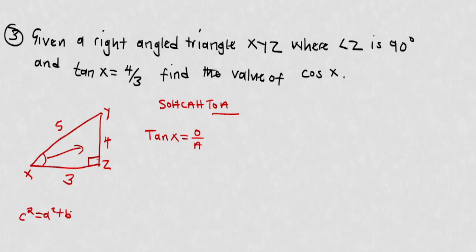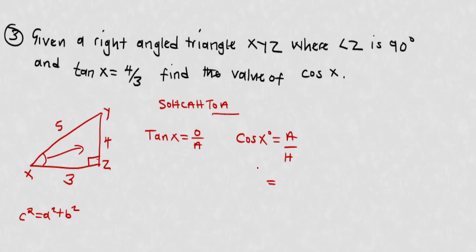You can verify using c squared equals a squared plus b squared with a equals 4 and b equals 3, giving c equals 5. We've been told tan X equals 4 over 3, and now we need cos X. Cosine is adjacent over hypotenuse. The adjacent is 3 and the hypotenuse is 5, so cos X equals 3 over 5. Leave it as a fraction.